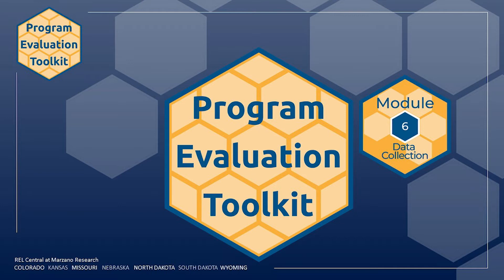Module 6 also features the AMP example introduced in module 1. AMP is a fictitious after-school middle grades math program started in response to lower than expected homework completion rates and a lack of meaningful after-school activities for middle school students. The complete AMP logic model from module 1, which includes citations, is available on the resources page of the website.